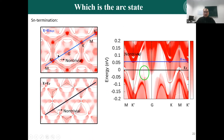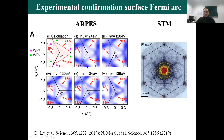This state is really the Fermi arc related to the Weyl point. Later, our experimental collaborations confirmed our results. This is our theory calculation, this is the ARPES spectrum, and this is the STM measurement and quasi-particle interference. All our predictions were really confirmed by the experimental measurements.